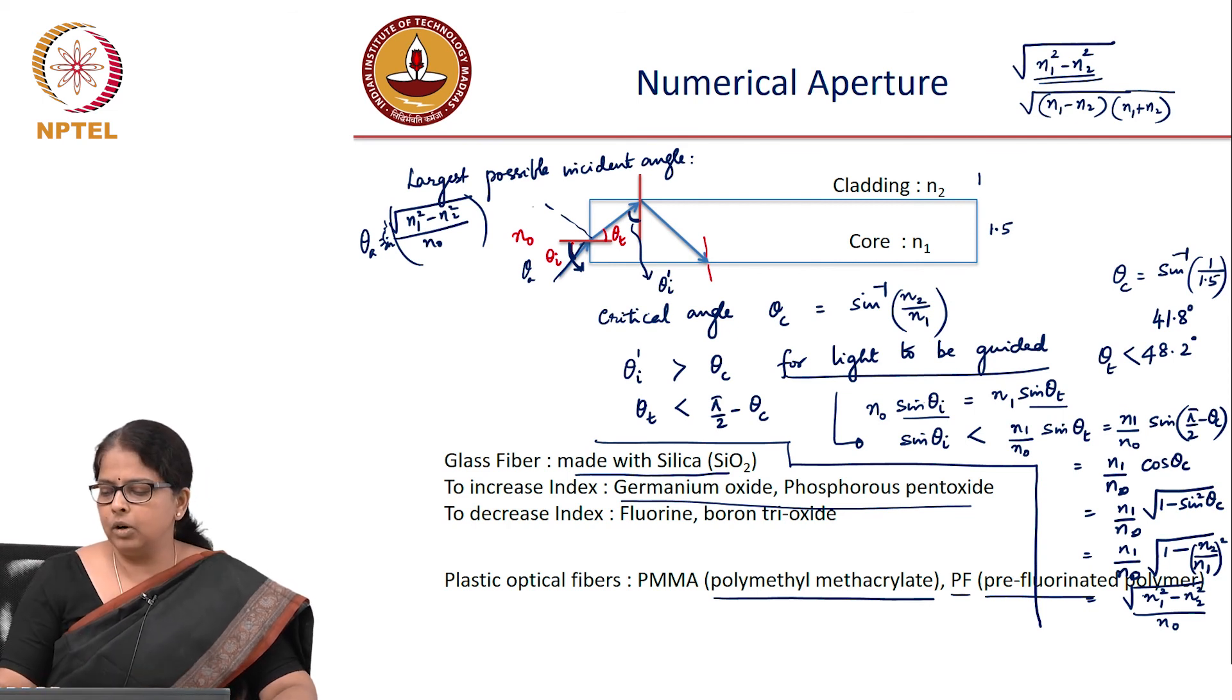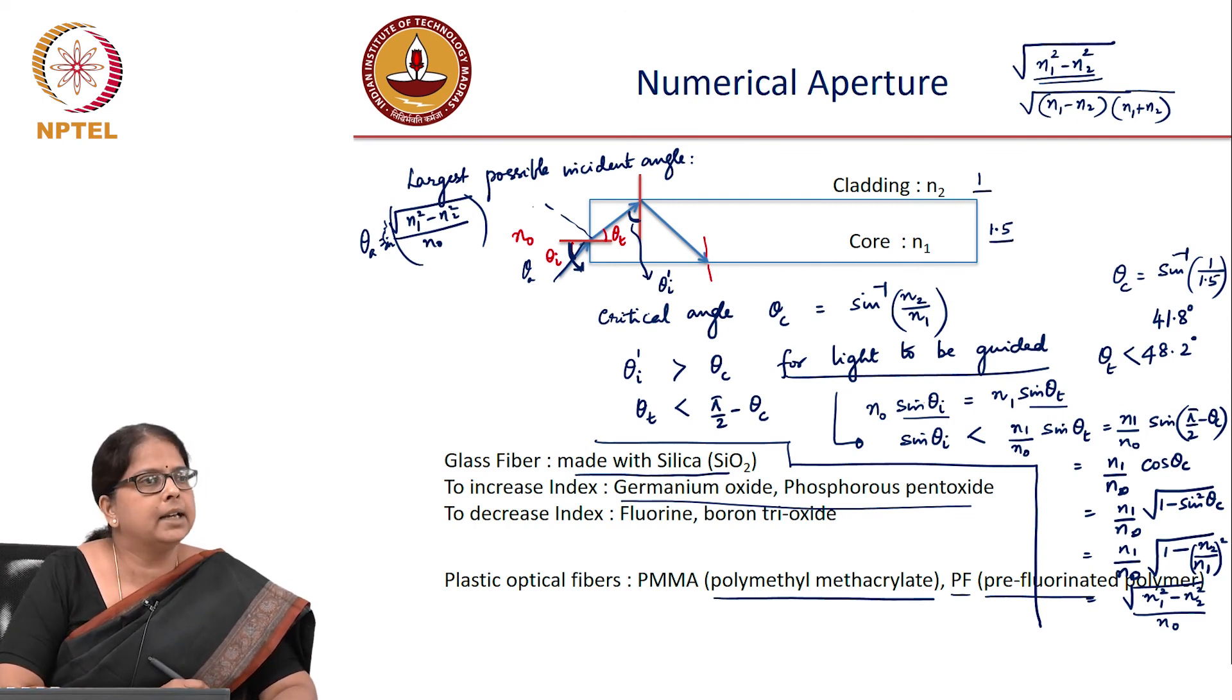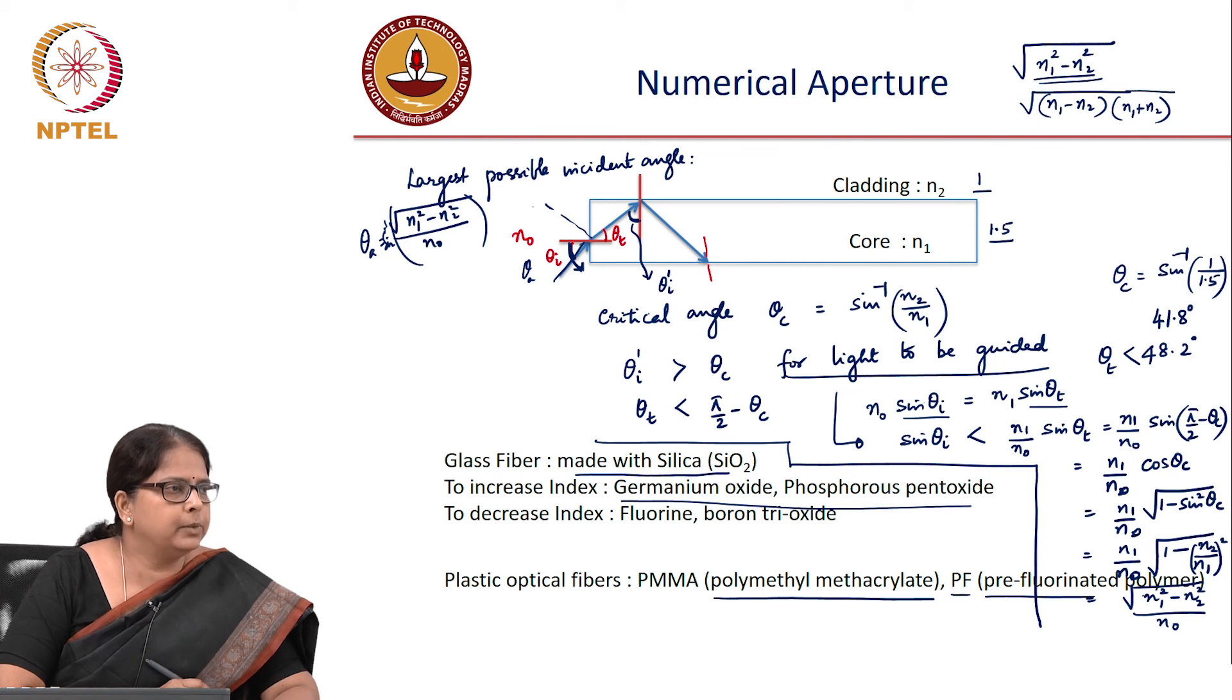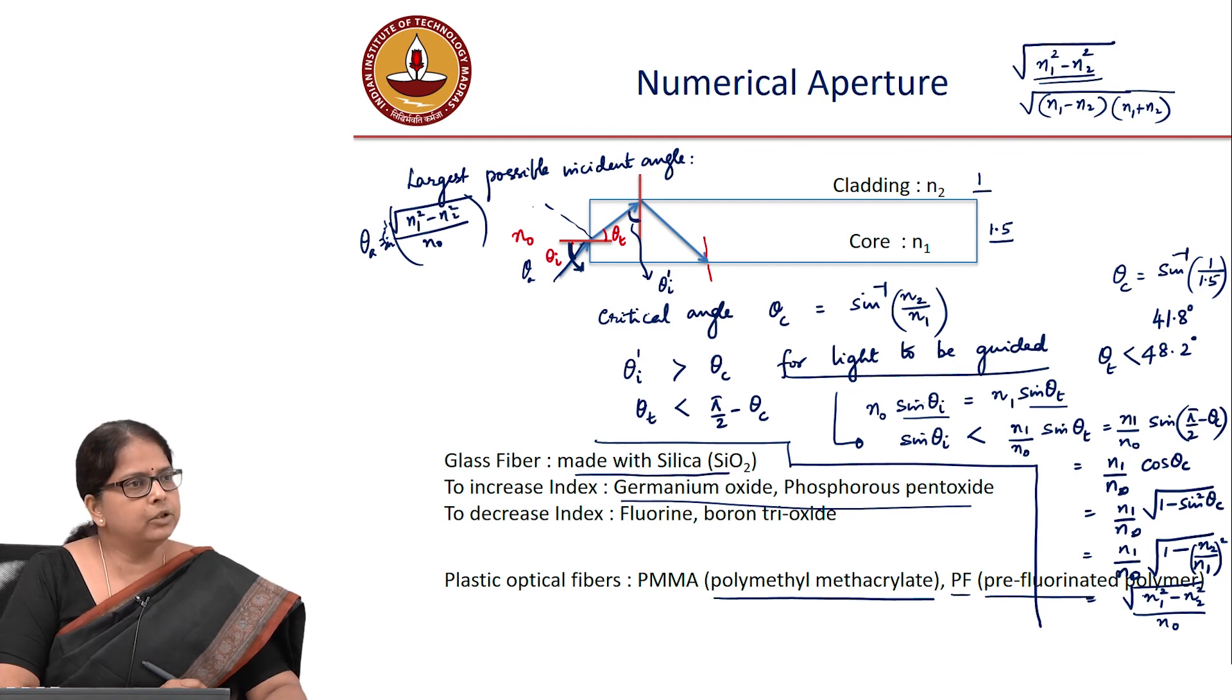In reality, the core-cladding difference is not as large as shown here. The difference between core and cladding index is very small, in the third decimal place. Core will be 1.45, for instance, and cladding 1.442 or similar. This covers numerical aperture, acceptance angle, and so on.